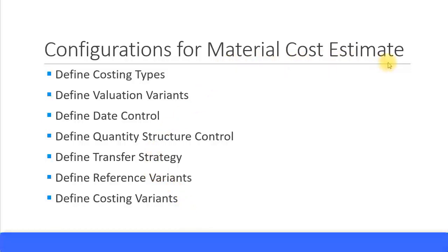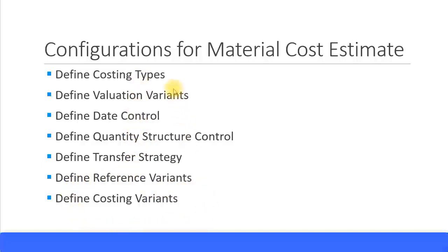There is a series of configurations for the material cost estimate. You start from defining costing types, then valuation variance, date control, quantity structure control, transfer strategy, reference variance, and the costing variant. Ultimately we want to define the costing variant, but we will need to complete all the setup steps to get there. We will go through this step by step.